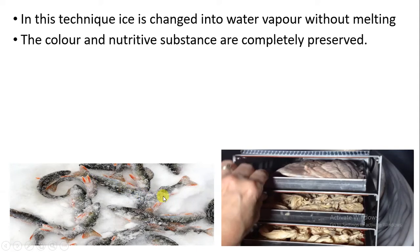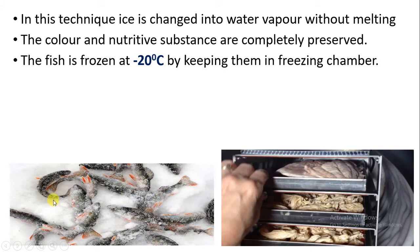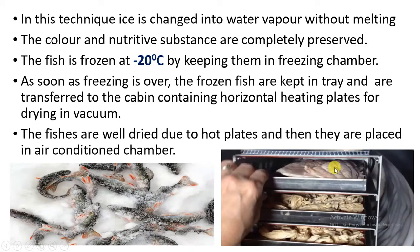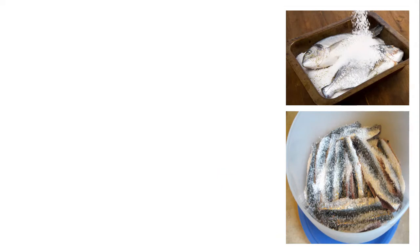The fish is frozen at minus 20 degree Celsius in the freezing chamber. After freezing is complete, the frozen fish is placed in a tray inside a cabin where horizontal heating plates are present. These plates carry out sublimation — the frozen form of water is converted into water vapor, and this is how drying of the fish takes place with the help of the hot plates. The fish is then stored in an air-conditioned chamber.